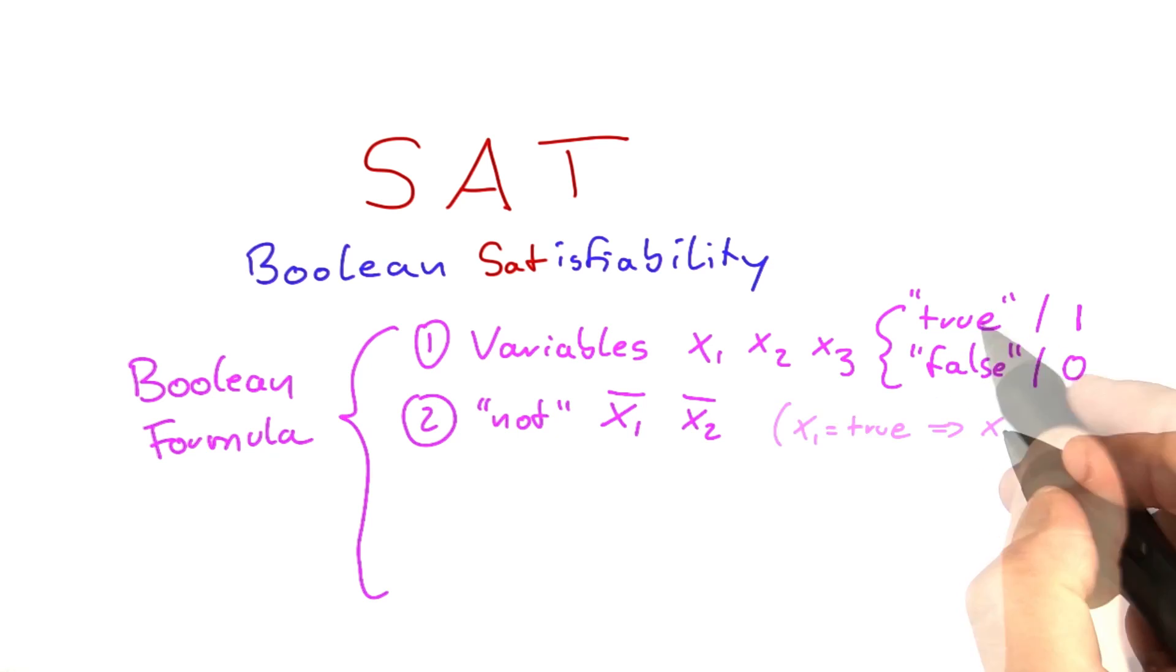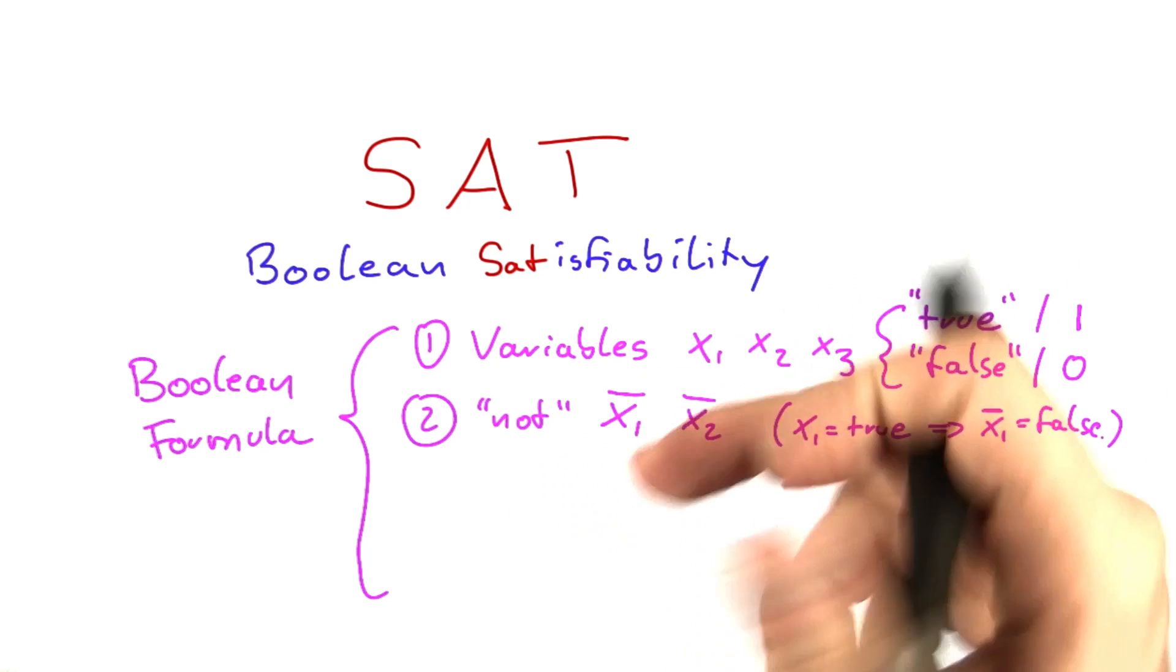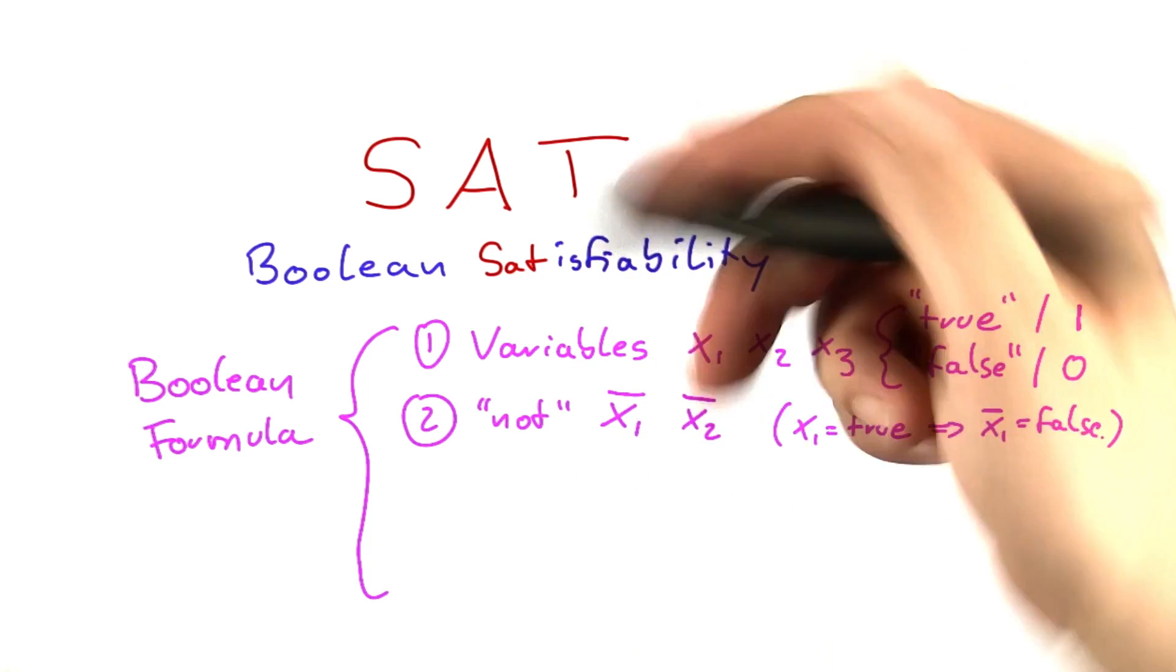For example, if x1 equals true, then not x1 equals false. It basically just flips that variable.